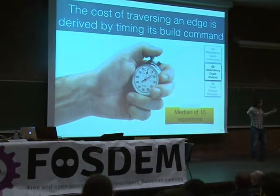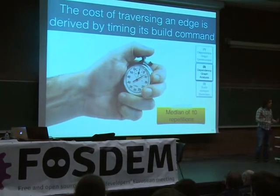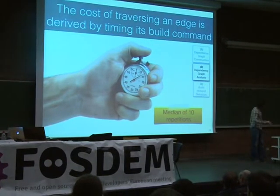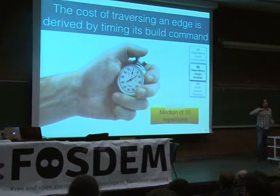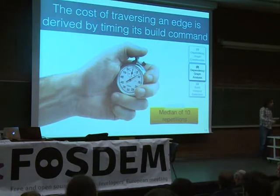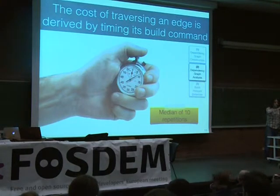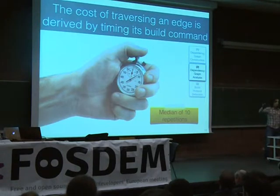Now we have this big graph and we can see which files trigger the most commands, but it may be that some commands take longer than others. So we wanted a cost measure for each edge in the graph that represented something concrete. We executed a full clean build and timed each command, doing this 10 times and taking the median since system load can vary. Now we know how much it costs to traverse each edge in the graph, and we can trace through to find out how long each build would take.